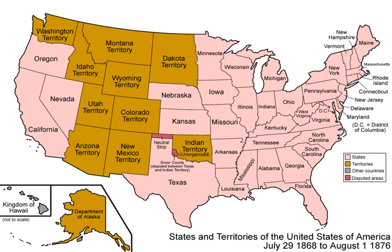"It is unnecessary to inquire whether this is not their condition, independent of stipulation. They do not, however, participate in political power; they do not share in the government till Florida shall become a state. In the meantime Florida continues to be a territory of the United States, governed by virtue of that clause in the Constitution which empowers Congress to make all needful rules and regulations respecting the territory or other property belonging to the United States." In Downes v. Bidwell, the Court said the same construction was adhered to in the treaty with Spain for the purchase of Florida.